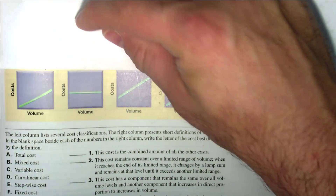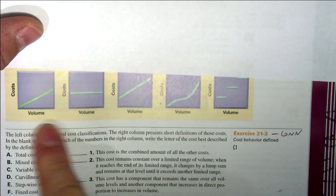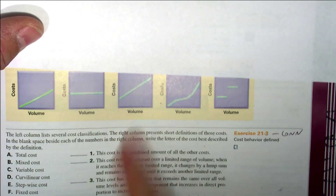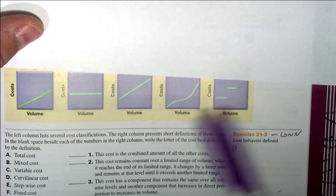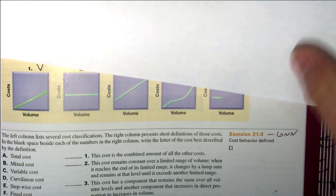We had one more — Exercise 21-2. Below are five graphs representing various cost behaviors. Identify whether the cost behavior in each graph is mixed, stepwise, fixed, variable, or curvilinear. Graph number one — variable. Graph two — fixed. Graph three — mixed, because it doesn't start at the corner; it starts up the y-axis, so there's a fixed element. Graph four — curvilinear. Graph five — stepwise.